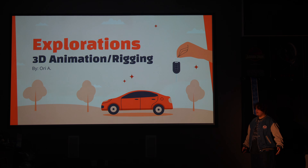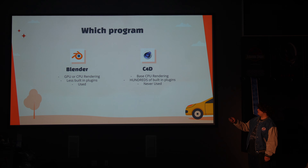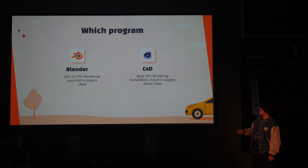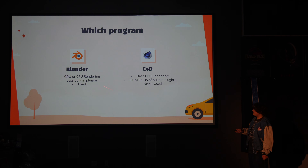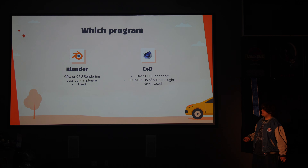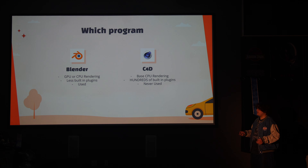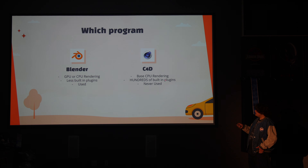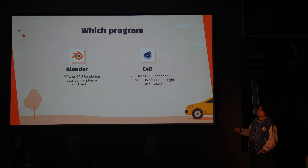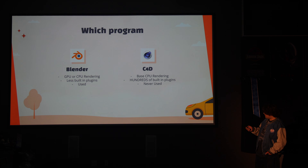The first step of animation is actually figuring out what software you want to use. I was hit with these two choices: Blender or Cinema 4D. Blender lets you render using your GPU or CPU — you want to use your GPU because CPU rendering takes so long, even with 64 cores. Cinema 4D only uses a basic CPU render. Blender is a lot more basic, and I've also used Blender before, so I can't really use it again. So my choice was Cinema 4D.